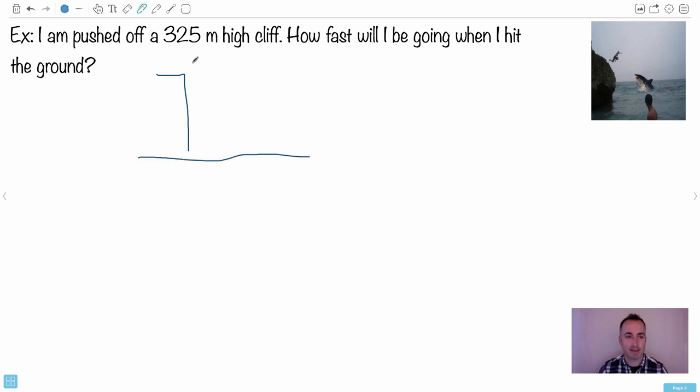So here's the cliff here, here's me, not good. There we go, not happy. So what happens is this height right here is 325 meters and the question is how fast will I be going when I hit the ground?